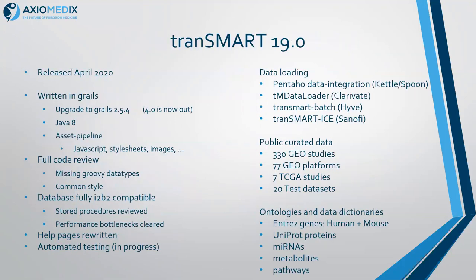Transmark is written in Grails, so the code is in Groovy plus Java, JavaScript, SQL, and some other sources. In the latest release we upgraded to Grails 2.5, which got us up to Java 8. And at long last, Grails 4.0 has come out, so the next release is going to be able to finally upgrade to Java 11.